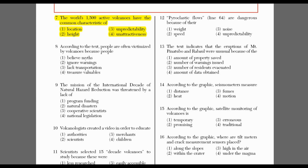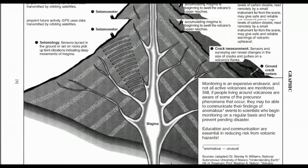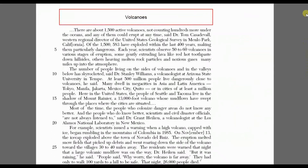To the text. I see the number 1,500 right away in the sentence: there are about 1,500 active volcanoes, not counting hundreds more under the oceans, and any of them could erupt at any time, said Dr. Tom Casadevall, Western Regional Director of the United States Geological Survey in Menlo Park, California. That's a lot of information, but I'm going to continue reading carefully to see if it connects to the question. I see that 1,500 appears again — 583 of the 1,500 have exploded within the last 400 years.